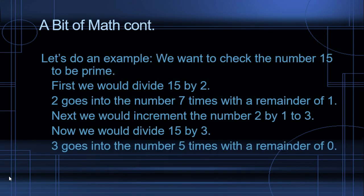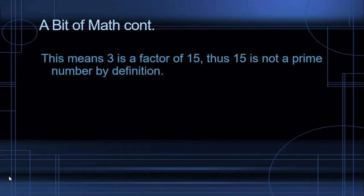So let's do an example. We want to check the number 15 to be prime. First, we would divide 15 by 2. 2 goes into the number 7 times, with a remainder of 1. So next, we would increment the number 2 by 1 to get 3. Now we would divide 15 by 3. 3 goes into the number 5 times, with a remainder of 0. This means 3 is a factor of 15, thus 15 is not a prime number by definition.